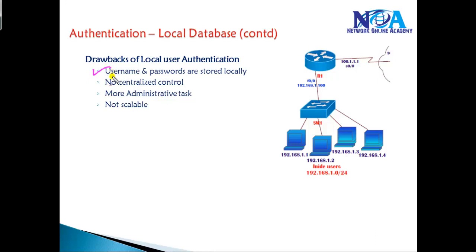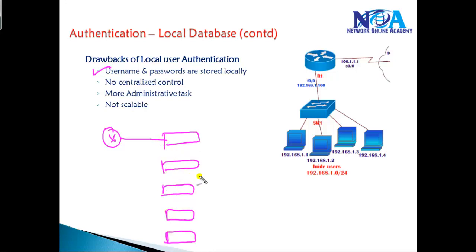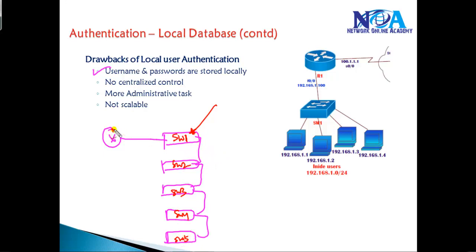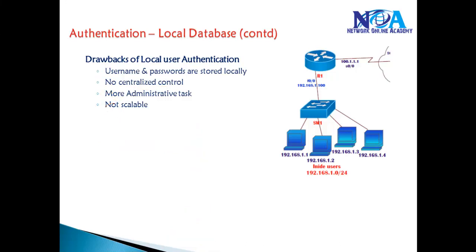One major drawback with local-based authentication is that we need to create a username and password on each local device. For example, in a big network with a router connecting to multiple switches — Switch 1, 2, 3, 4, and 5 — we'd need to go to each and every device and create the username and password. There is no centralized control, which increases the administrative task and is really not scalable for large networks.